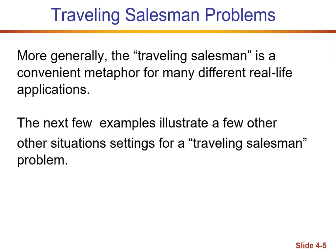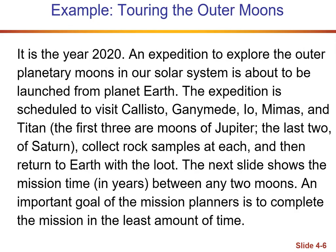More generally, the traveling salesman is a convenient metaphor for many different real-life applications. There are several examples. This one is talking about touring the moons. A spacecraft is about to be launched from planet Earth to explore the first three moons of Jupiter and the last two of Saturn. We want to collect rock samples at each of these sites and then return to Earth. An important goal of the mission planners is to complete it in the least amount of time.